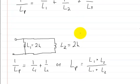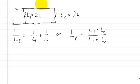Let's do an example. Here we have a circuit of two inductors in parallel. You could use this formula: 1 over Lp, the inductance in parallel, equals 1 over L1 plus 1 over L2. Or you could use this one: the inductance in parallel equals L1 times L2 over L1 plus L2.